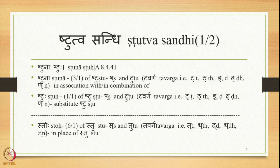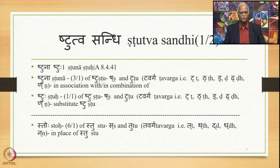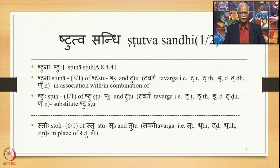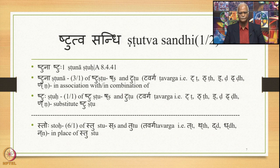We are studying the Shtutva Sandhi and the Sutra Shtunashtuhu (8441). This sutra consists of two Padas: Shtuna and Shtuhu. Shtuna is the third-slash-first of Shtu. Shtu is composed of two elements: Sha and Tu. Tu means Tavarg, that is Ta-Tha-Da-Dha-Na. Shtuna means 'in association with' or 'in combination of.' Shtuhu is the first-slash-first of Shtu.